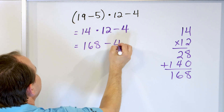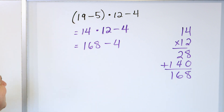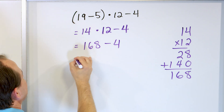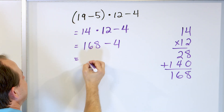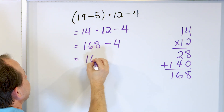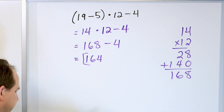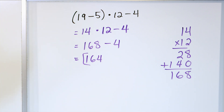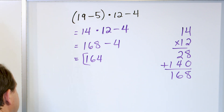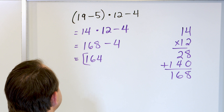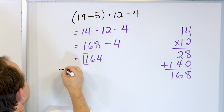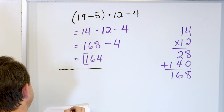The minus 4 happens last. 168 minus 4 is 164. So the answer is 164. Even though the numbers are bigger, it's the same process.